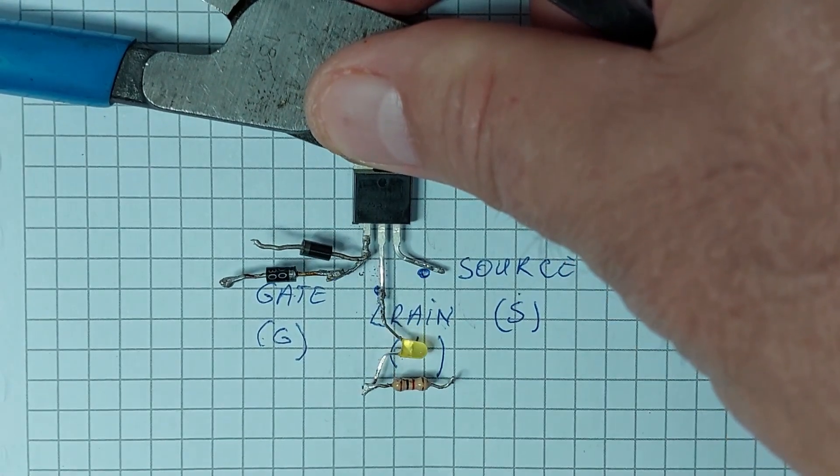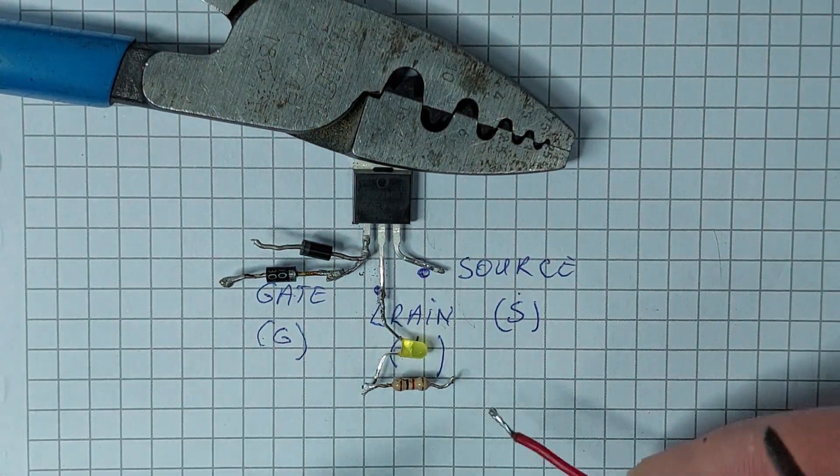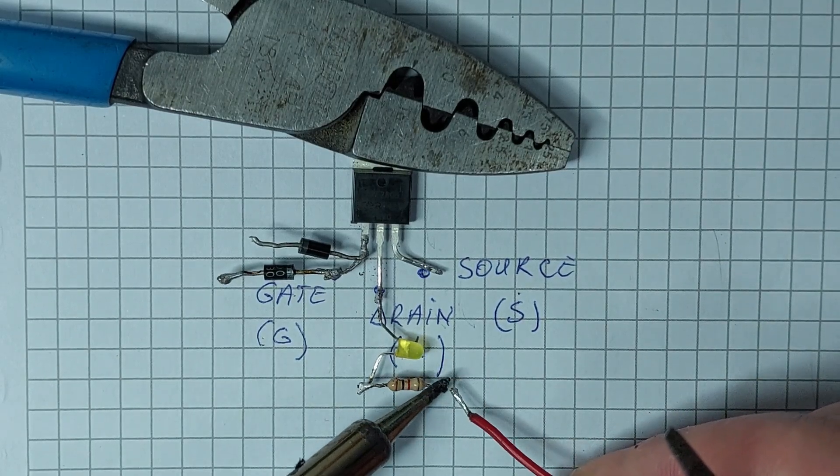With the resistor in place, I'll connect its other end to the positive terminal of a DC power source, 12V. This will serve as the primary voltage supply for our circuit.